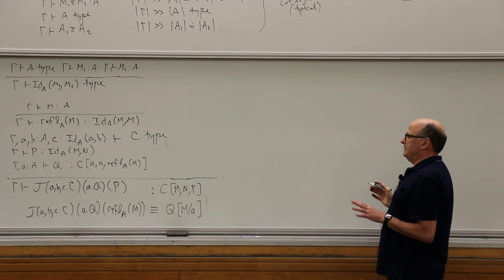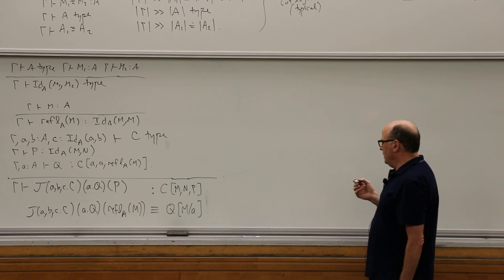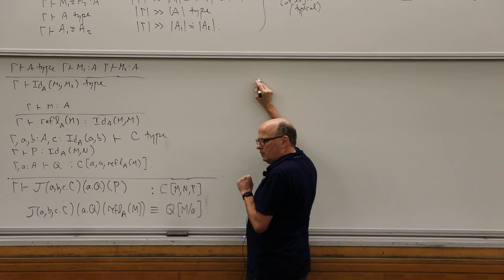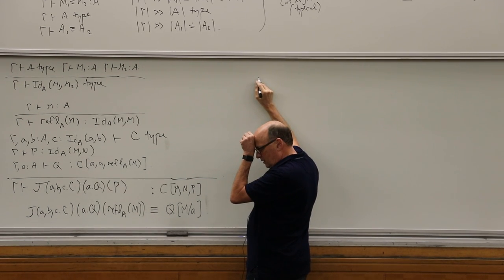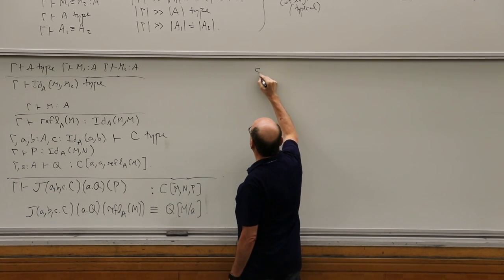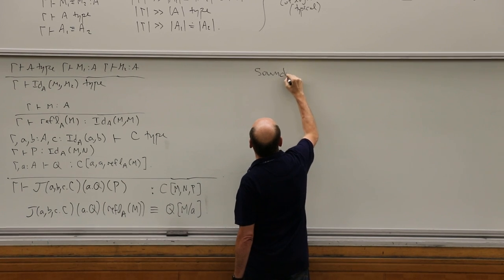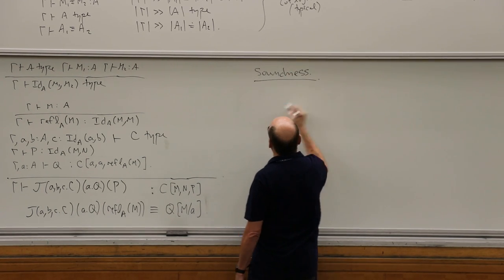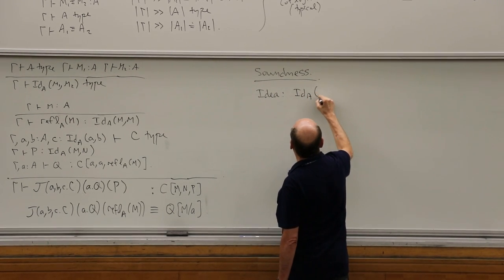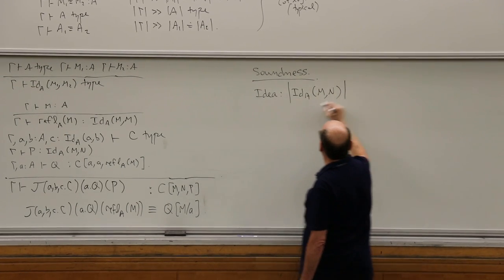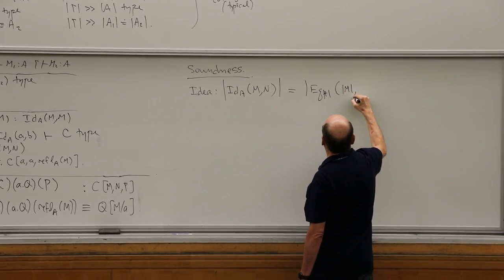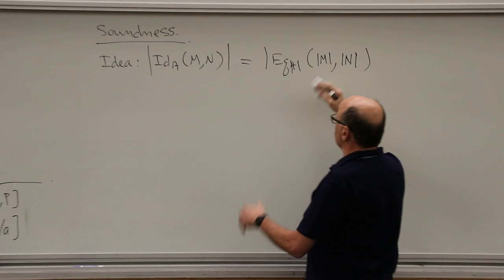It's a universal characterization of equality, you might say. The problem is it's not exactly what you might think at first blush, because there's an important theorem. Let me think of what order to say the next thing. So let me revisit soundness. The key idea is: identity of A can be interpreted as equality.